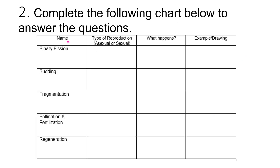Number two: Complete the following chart below to answer the questions. For example, we have binary fission — what type of reproduction, what happens, and then an example or drawing of an organism. The same applies for fragmentation, pollen and fertilization, and regeneration. You need to complete the chart below.